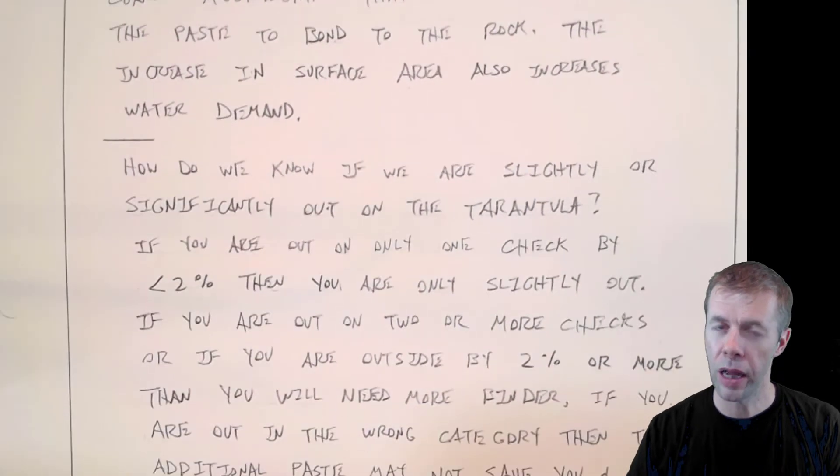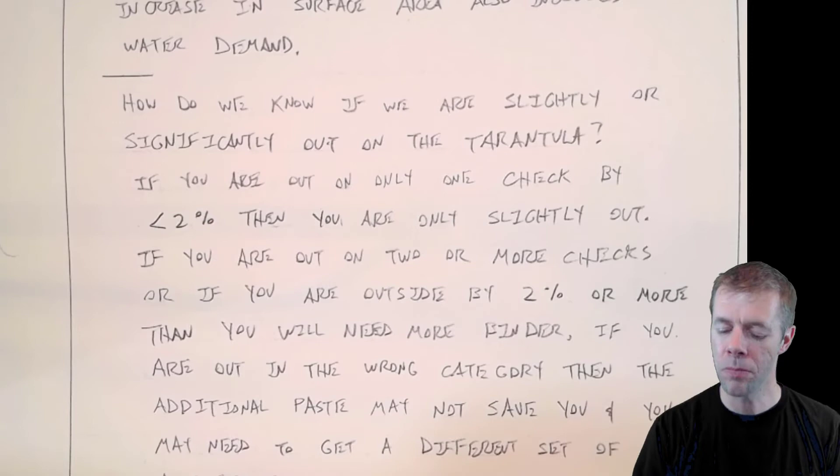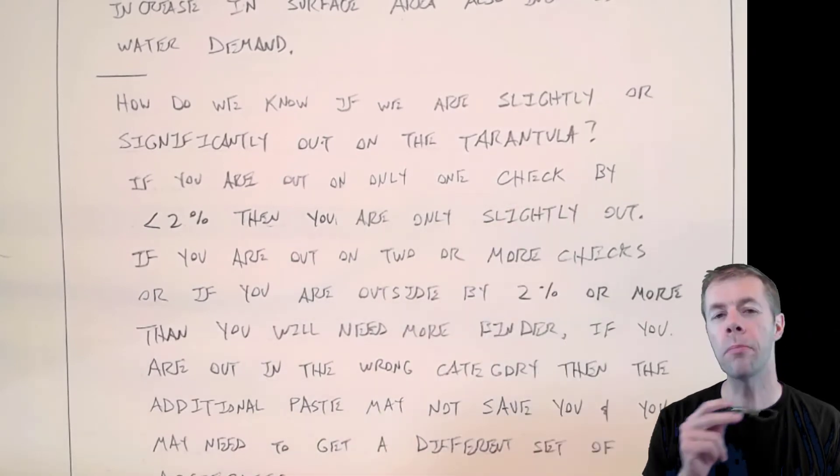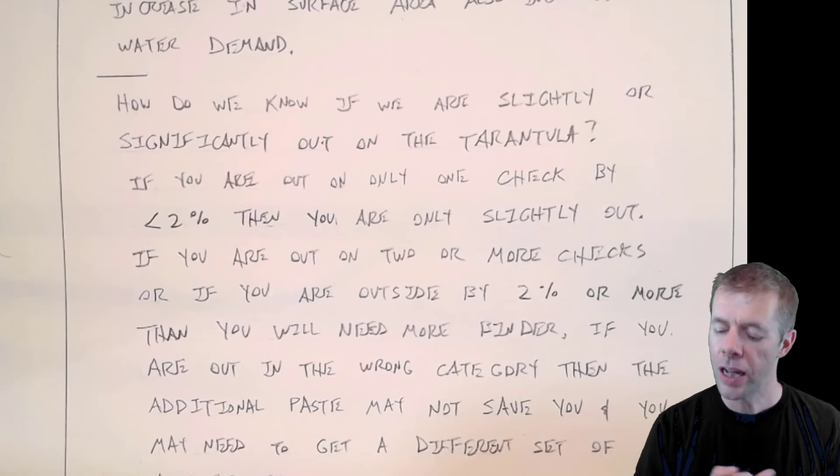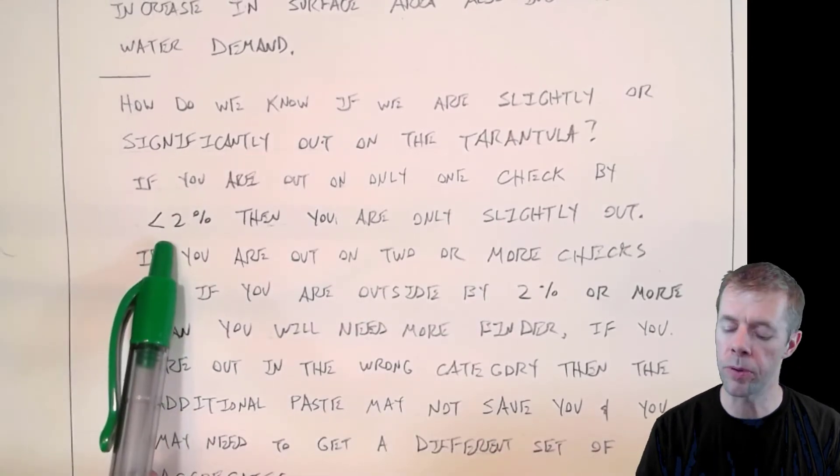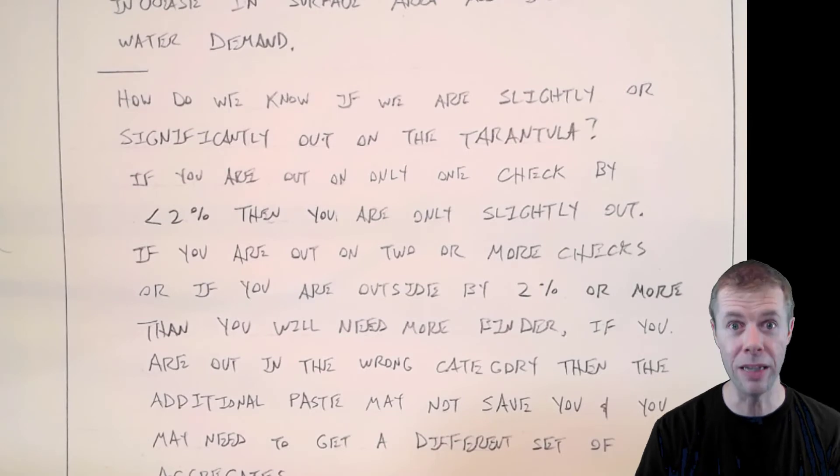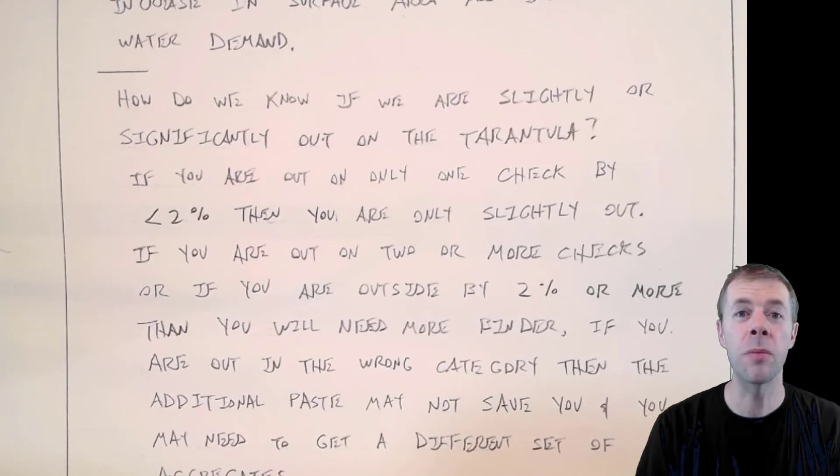So how do we know if we're slightly or significantly out of the Tarantula Curve? What does that mean? Well, based on my experience, if you're out of the Tarantula on only one check, that means one place on the curve or possibly the coarse sand check or the fine sand check, if you're only off on one of them and you're only slightly off, you're only off by about less than two percent, then you can get away with half a sack of cement that'll probably bring you okay. It'll probably make things better. The Tarantula Curve is really drawn so that you're at the oh no limit, like that's the edge of the cliff. If you go over it a little bit, you can survive. But if you start to go over it significantly, you're going to need a lot more binder, which means a lot more paste, or it might not work at all.